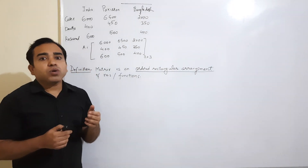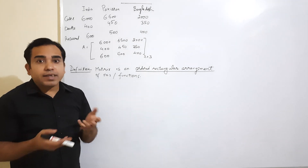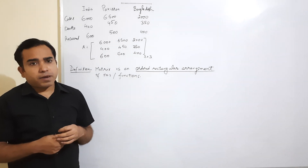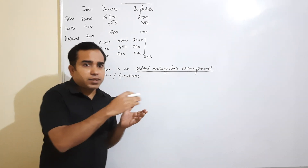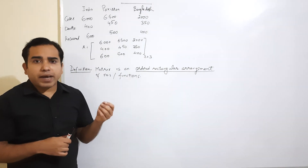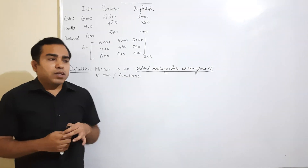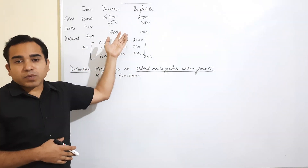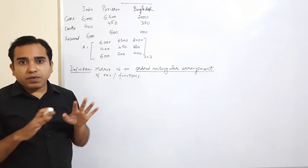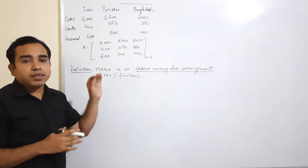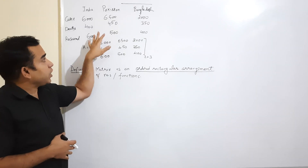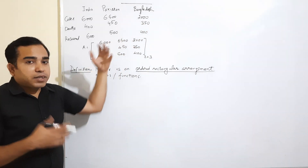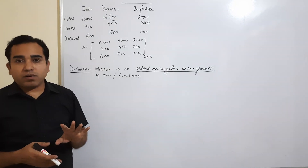If we write this data in words in a paragraph manner, it becomes difficult to analyze and understand. It is also difficult to process it further — for example, to add, subtract, or multiply certain entries. So I have written this data in table manner. From a paragraph, we write things in table manner, which is simpler. A matrix is actually a simplified form of a table.